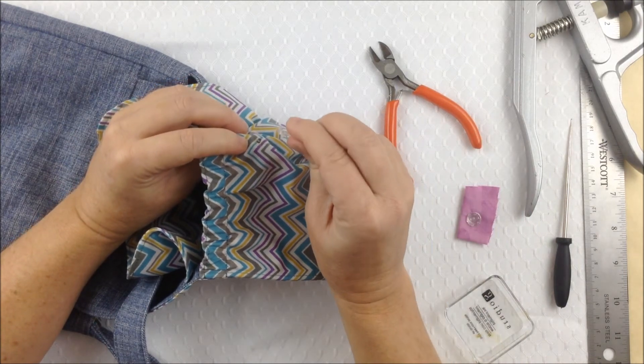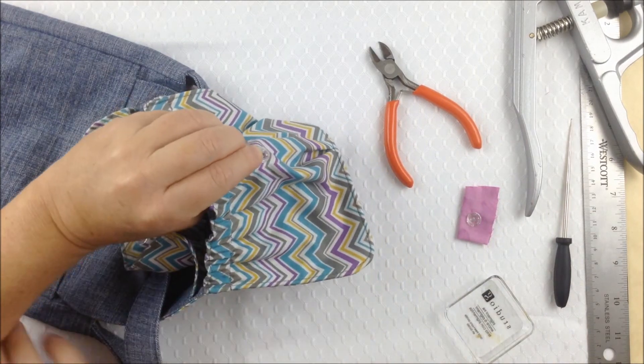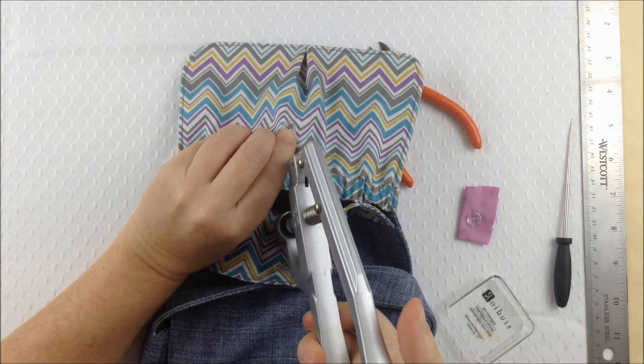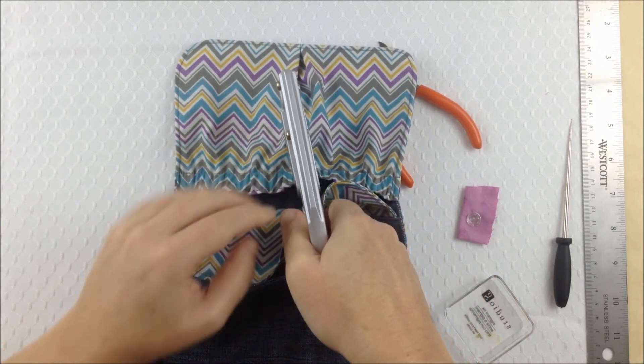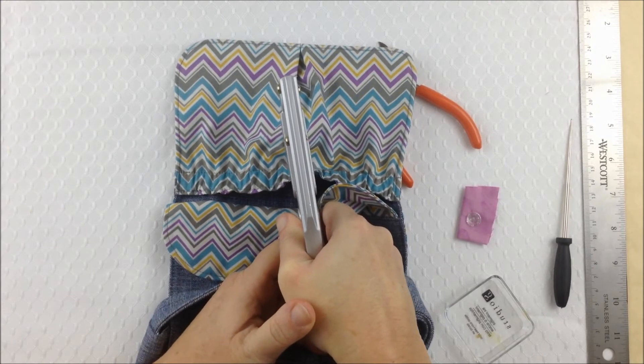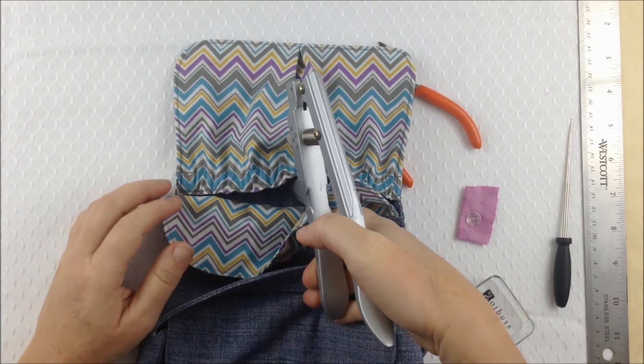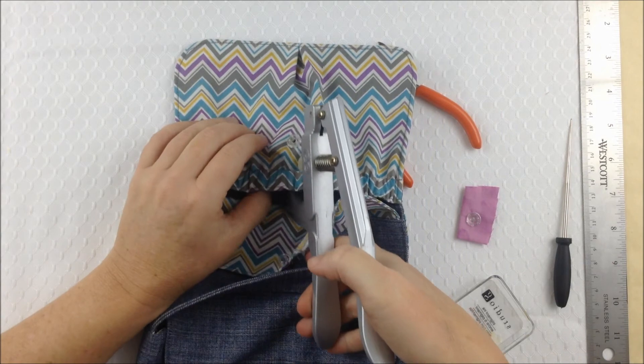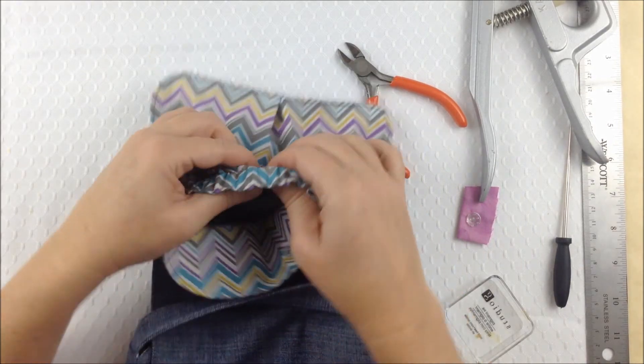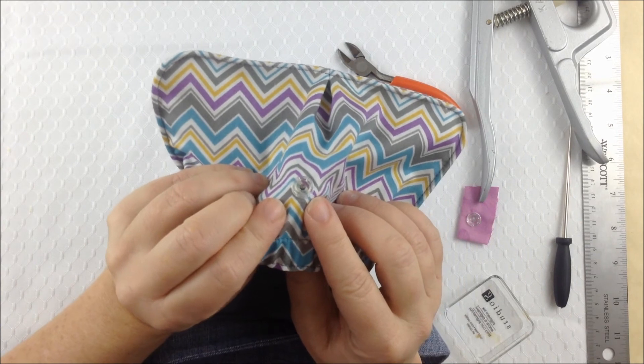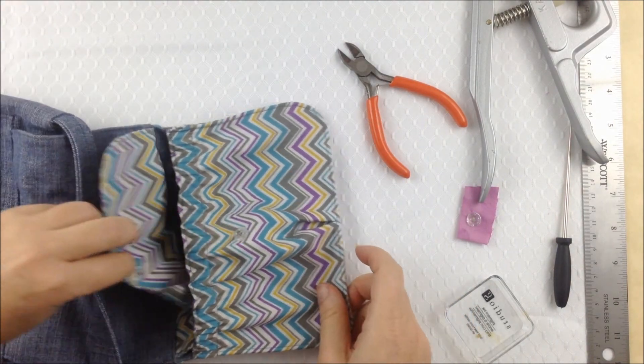And then you take the female part. Place that over the post. And then take the pliers. Again, making sure everything lines up. And just squeeze. If you're having trouble squeezing, just try leaning on the pliers on the table to give you a bit more leverage. And that's the other side done. Just make sure it's secure. Just give a little wiggle. And you can see there's no excess plastic in the centre. And it's perfectly centred. So now the big test.